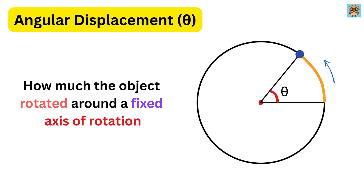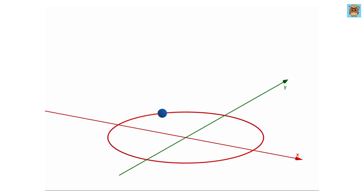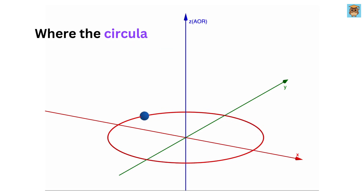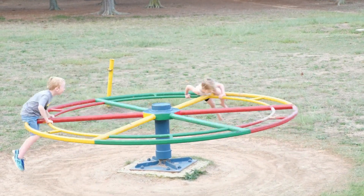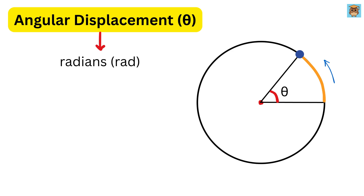Instead of measuring how far an object moves in a straight line, we measure how much it has rotated around a fixed axis of rotation — this is called angular displacement, measured in radians. The axis of rotation is an imaginary straight line around which the object rotates. Here it is shown as a blue arrow sticking up from the center of the circle. The ball moves in a circle, always keeping the same distance from that axis. Think of a playground merry-go-round: the pole in the middle is the axis and everything spins around it.